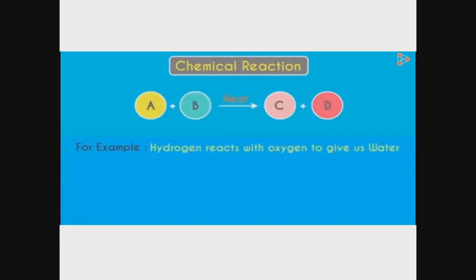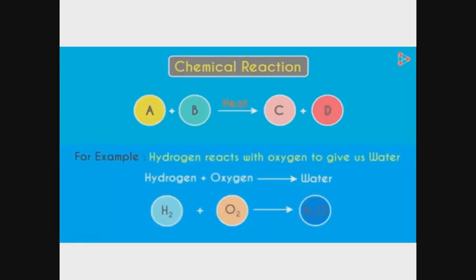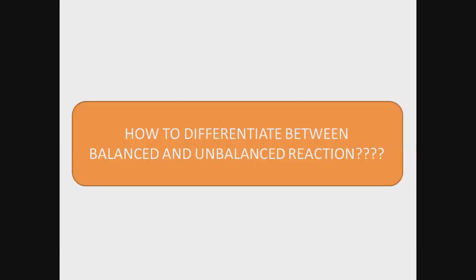Let's take an example of the formation of water. If we use the full words of chemical atoms — like 'hydrogen plus oxygen gives water' — then this representation of a chemical reaction is known as a word equation. When we use the symbols of atoms during the chemical reaction, it is known as symbolic representation.